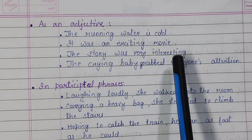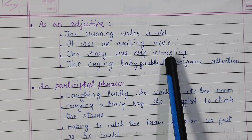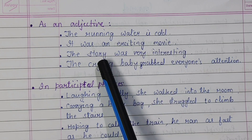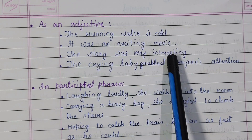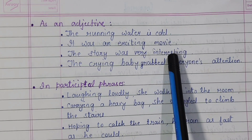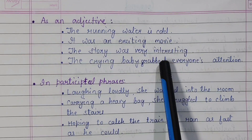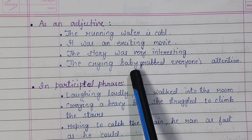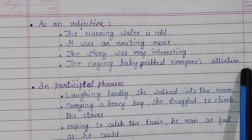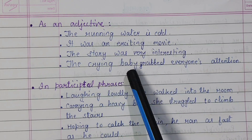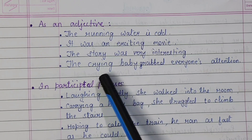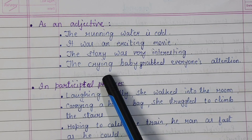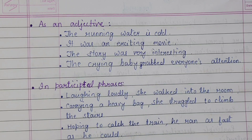'The story was very interesting.' What was very interesting? The story. Interesting says something about the story — a noun. So interesting is an adjective here, and it is present participle, the ing form of a verb. 'The crying baby grabbed everyone's attention.' Crying says about baby, so crying is present participle, acting as an adjective.